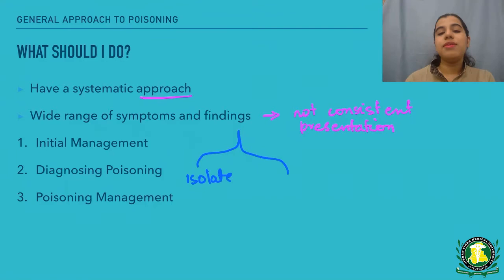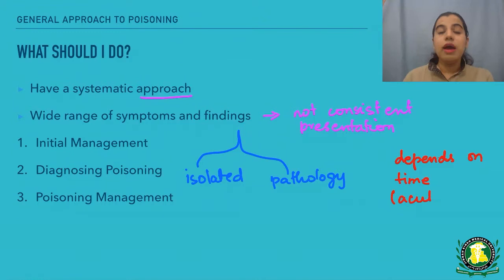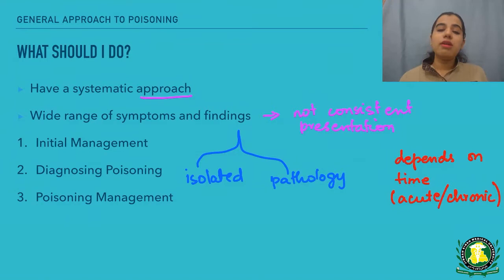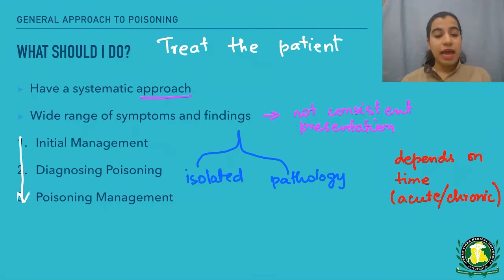Sometimes these cases occur in isolation — just poisoning — and sometimes they can occur with some other pathology like trauma or infection, and then there's even more confusion about whether the patient's condition is because of poisoning or because of the other pathology. The presentation can also depend on the type of agent ingested, the timing of ingestion, what medications the patient is taking, and whether it's one substance or multiple substances. But here's how you approach it: you will not approach it with the intention of treating the poison itself — you approach it with the intention of treating the patient.